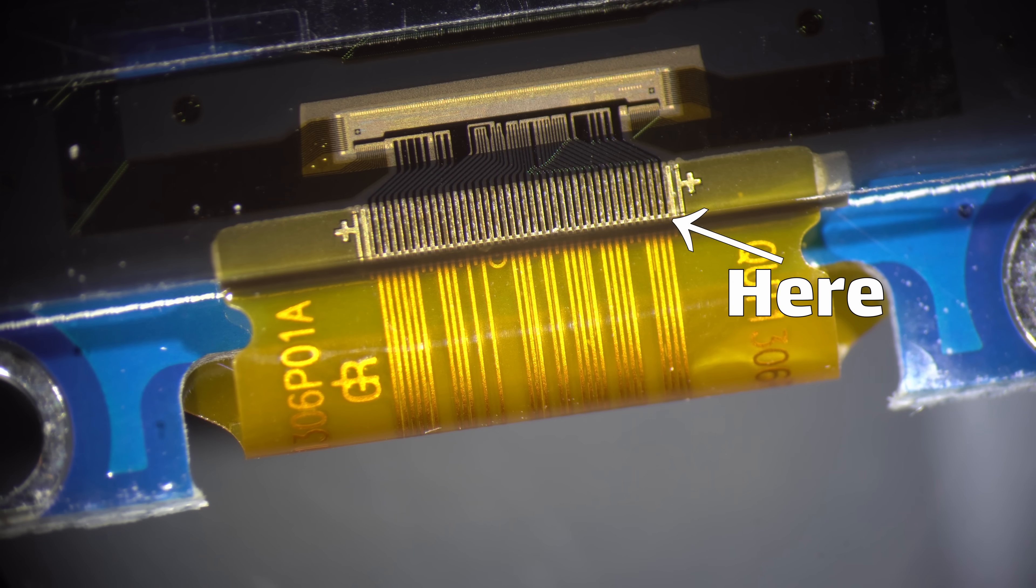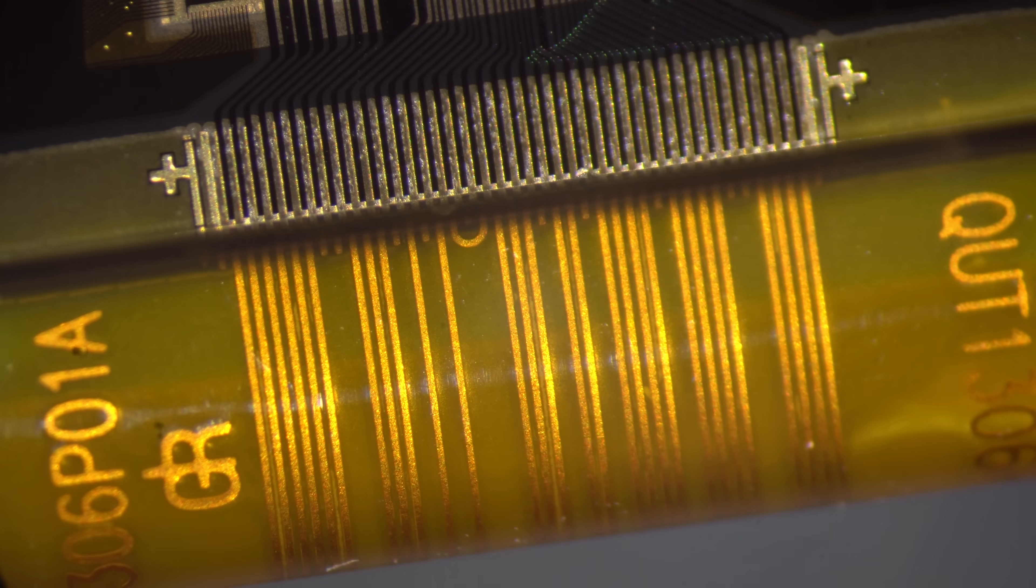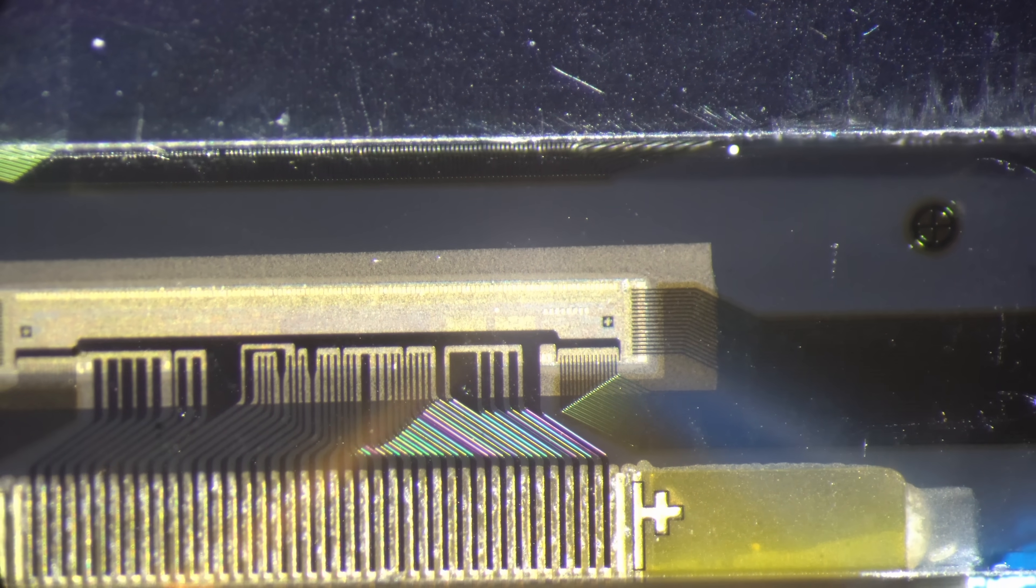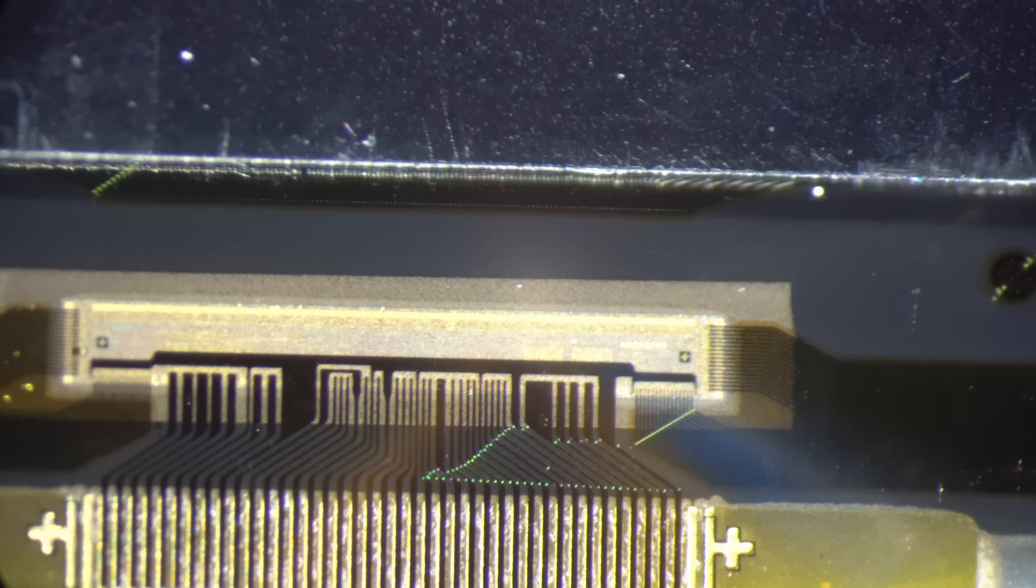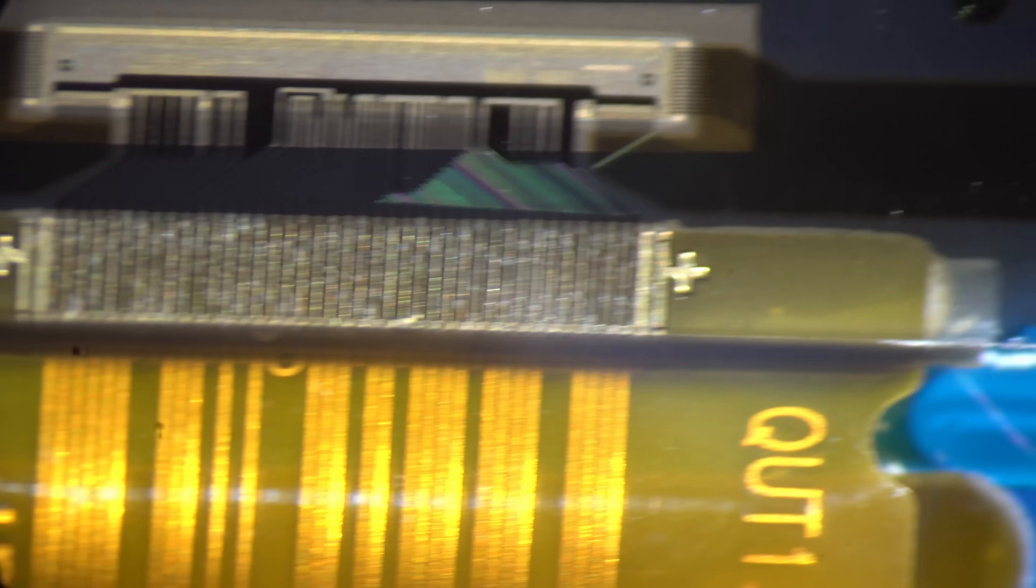But unlike the ribbon cable, the traces on the glass are extremely thin films of metal. We're talking like a couple hundred nanometers at the most. So you can't just solder to this directly like you would on a normal circuit board. It's simply too thin. And it's also usually a metal like aluminum, which is hard to solder to anyway.